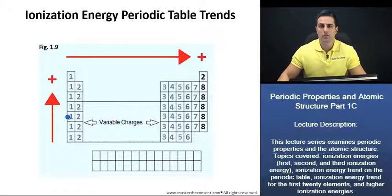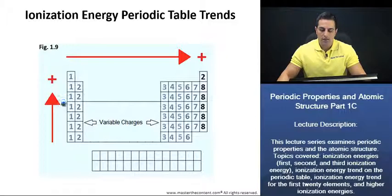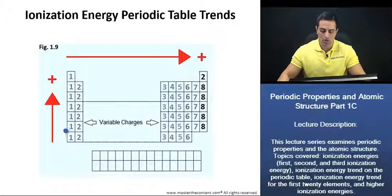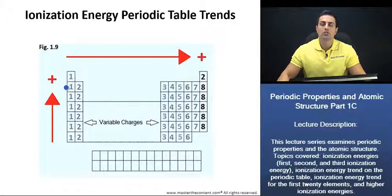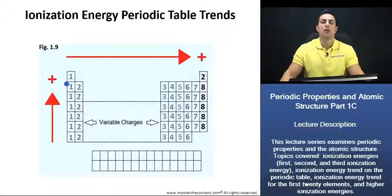That term we used in part 1B is called the effective nuclear charge. As we move down a group, the valence electrons are going to feel a smaller effective nuclear charge. Thus, these electrons are going to be easier to remove — they won't require as much energy, giving them a lower ionization energy. As we move up a group, those valence electrons are going to be closer to the nucleus and require more energy — thus a higher ionization energy — to remove them from the atom.